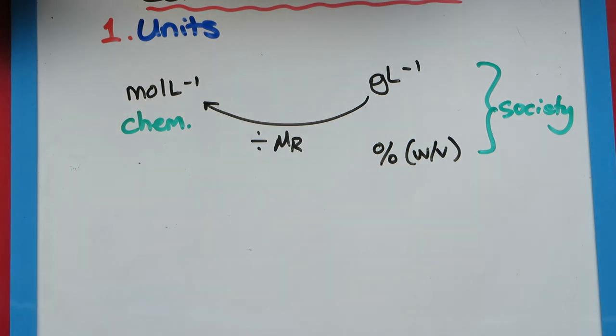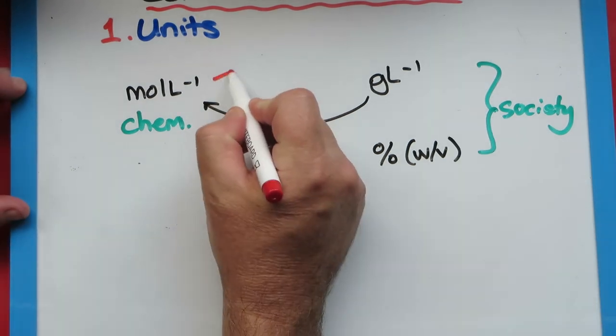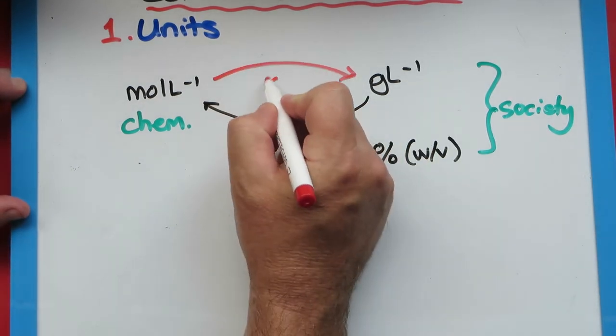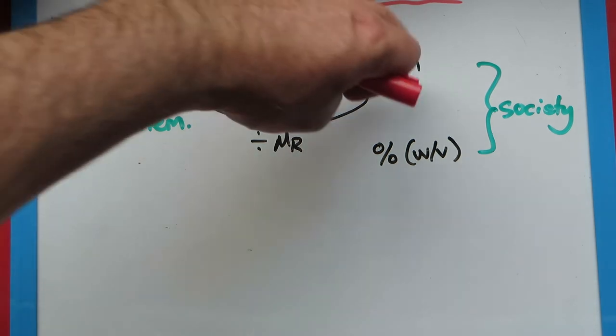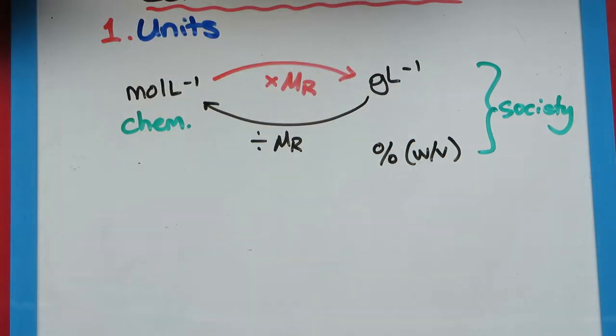Not surprisingly, to go the other way I simply multiply by that value. So if I know my moles per liter but I want to report it in a more user-friendly concentration, grams per liter, I multiply by the molar mass.